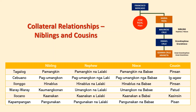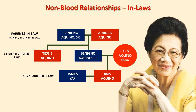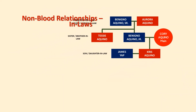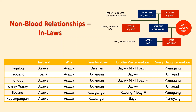Finally, there are also terms for in-laws, or non-blood relationships. The term for husband in Tagalog is Asawa, as well as in Ilonggo, Waray-Waray, Ilocano, and Kapampangan. Cebuano remains unique, as the term for husband is Bana. The term for wife is the same for all six languages presented here, which is Asawa. For parent-in-law, it is Bienan in Tagalog, Ugangan in Cebuano, Ilonggo, and Waray-Waray, Katugangan in Ilocano, and Katuangan in Kapampangan.